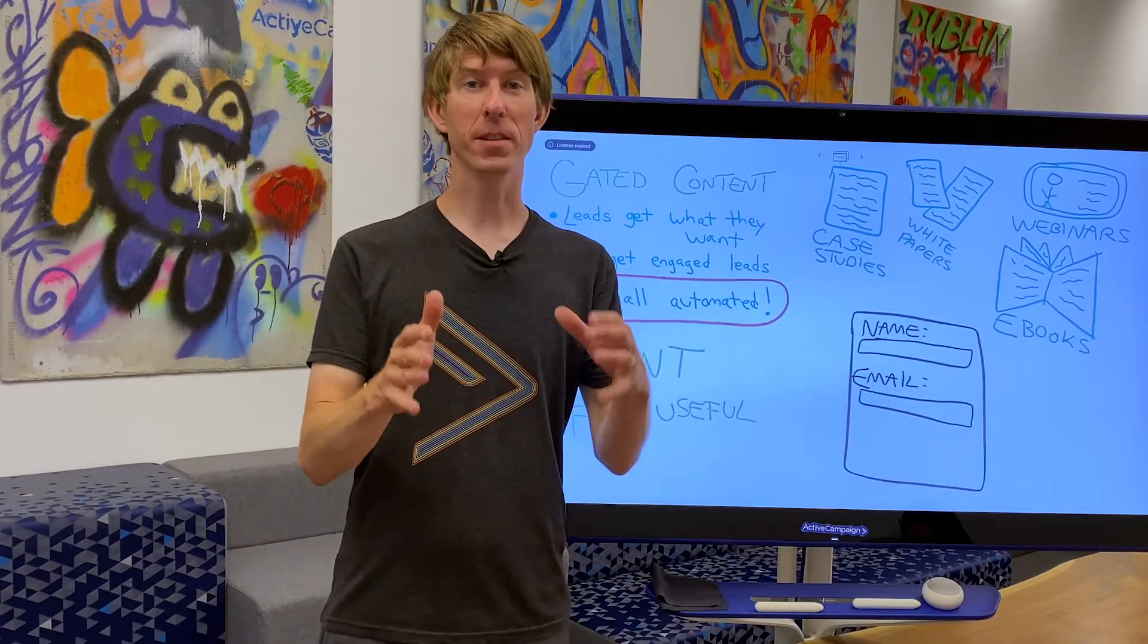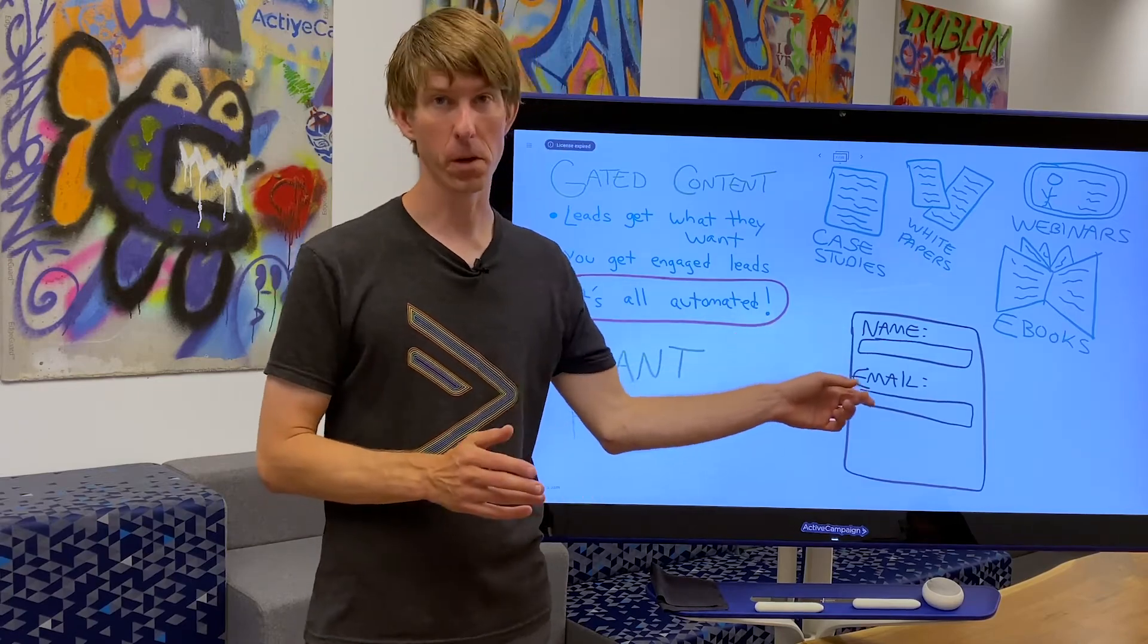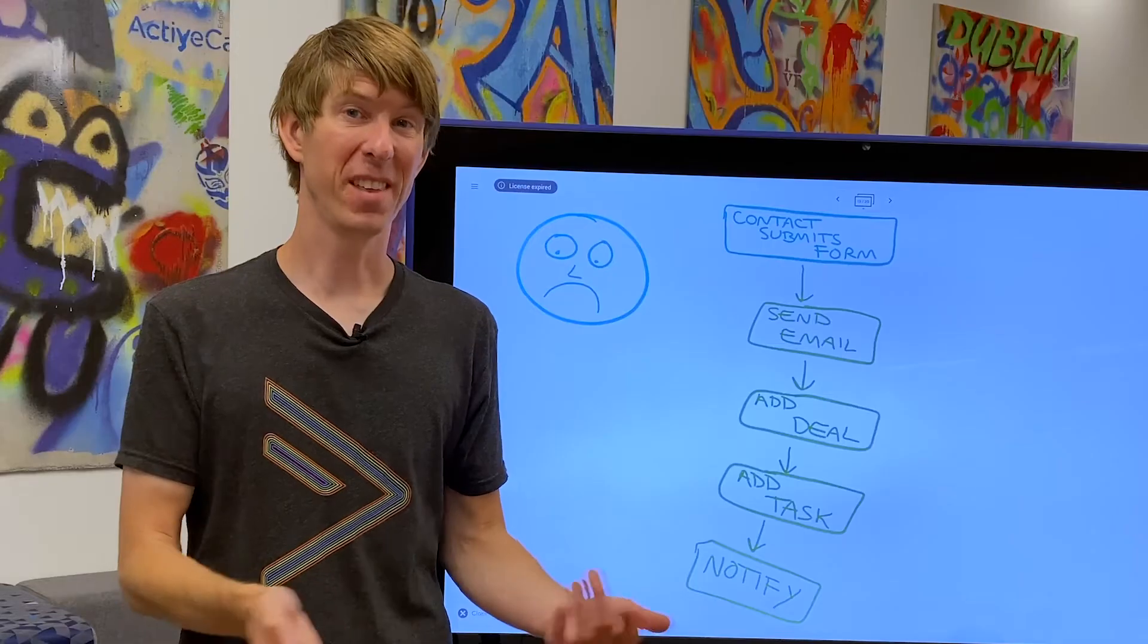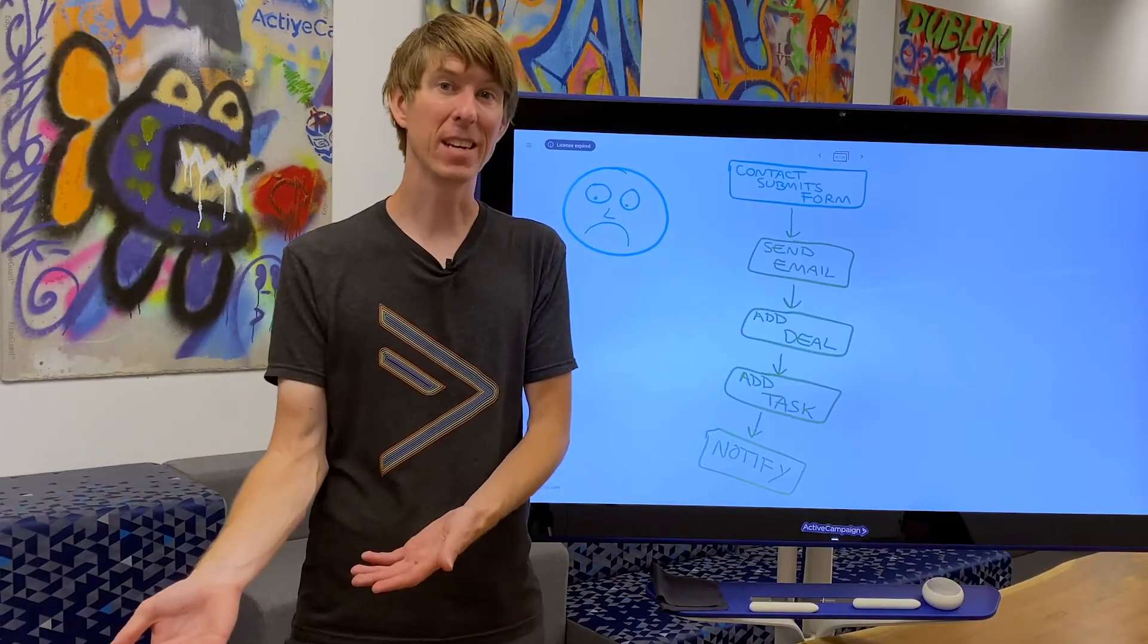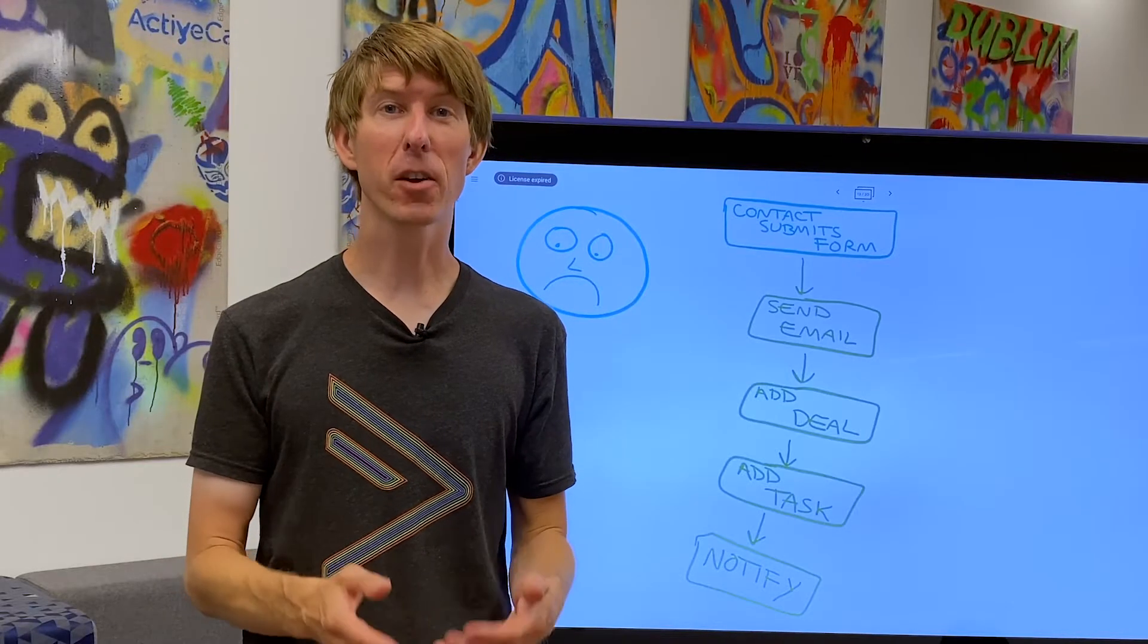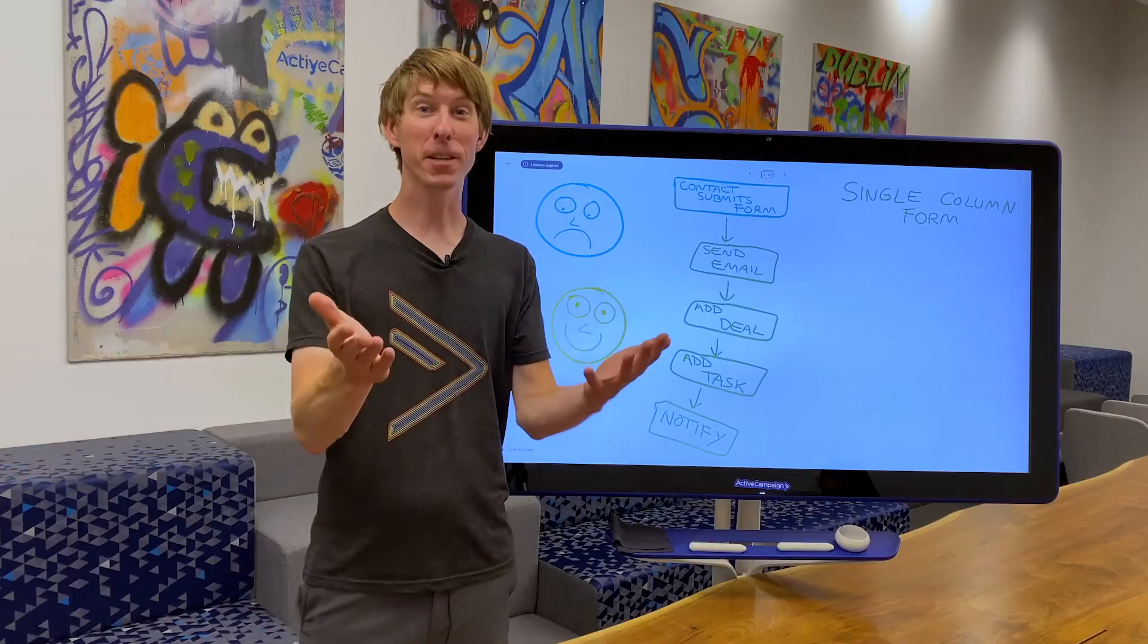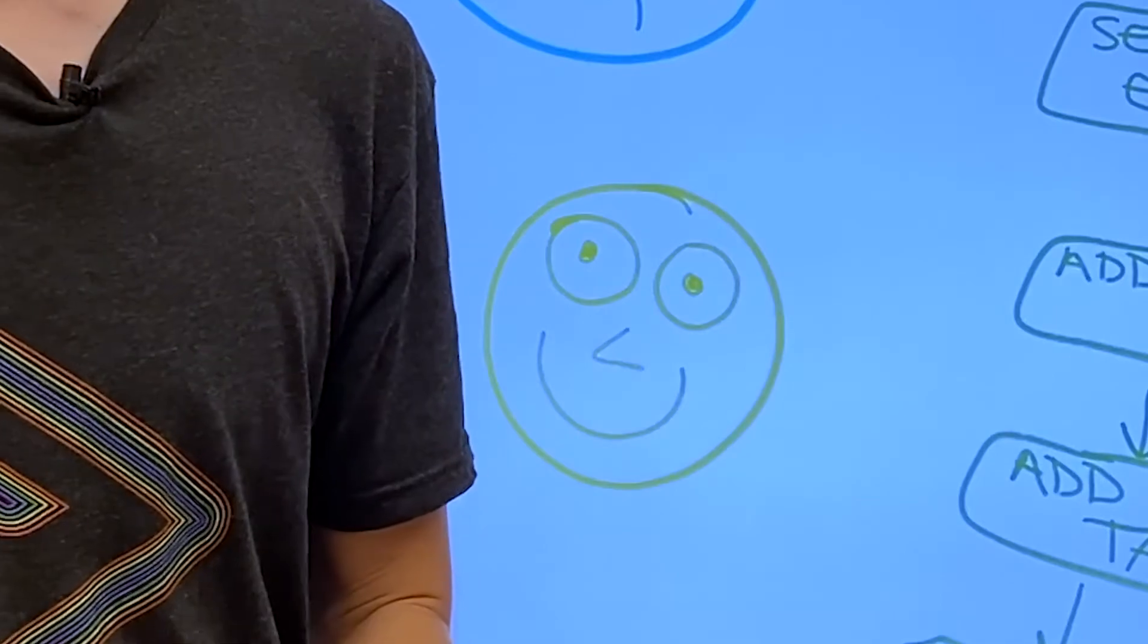The entire premise of gated content centers around the visitor filling out your form. If they don't fill out the form, they don't get the content they need, and you don't get a new lead. So how do we increase the chances of a visitor filling out the form? By reducing friction. Let's talk about four effective ways to reduce friction in forms.